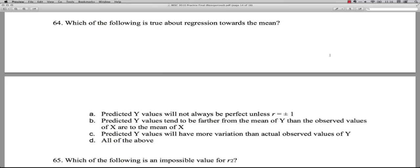Choice A says predicted Y values will not always be perfect unless R is equal to plus or minus one. Well, that's true actually. The only time you can make a perfect prediction is when the correlation has an absolute value of one. That means every dot is exactly on the regression line. B says predicted Y values tend to be farther away from the mean of Y than the observed values of X are to the mean of X. No, that is not correct.